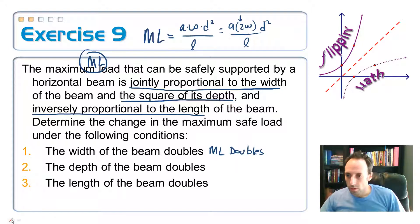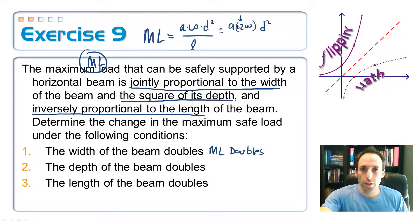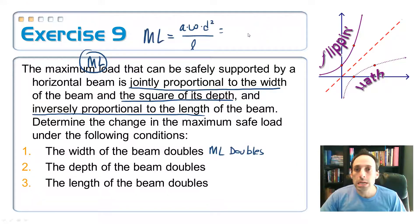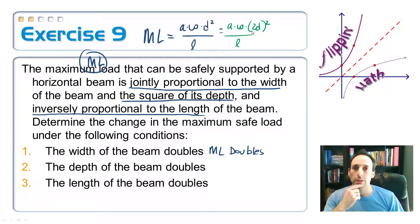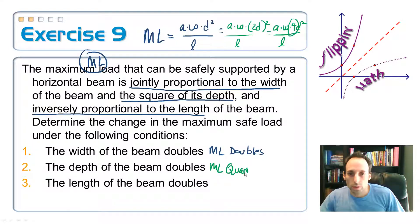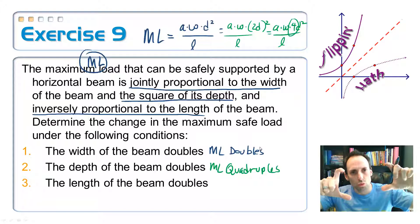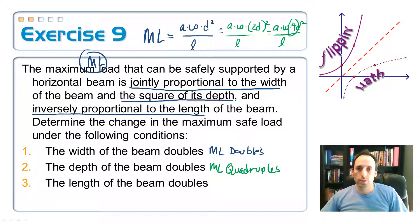Let's look at the second one. The depth of the beam doubles. And this time the depth doubles. So I have A times W times 2D squared. And the parentheses there are important because now I have to square that out. And that is A times W times 4D squared over L. Now compare this to the original one. I can see that it is four times bigger than the original. So it quadruples. So the maximum load quadruples. If you double the depth. So that's how fat that thing is. It makes it way, way stronger than if you just make it wider. That's what it's saying.